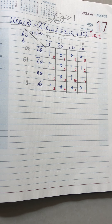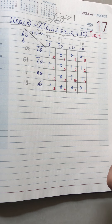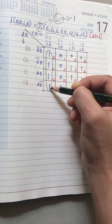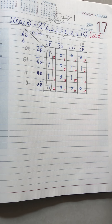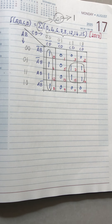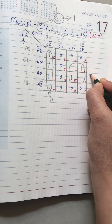Next is grouping. For grouping, first check for octal — octal means 8 terms — but here we don't have any octal group. Next is quad — quad means 4 terms. Here you have a first quad of four 1s and one more quad here. Next check for pairs — no pairs here. So we have two groups: this is g1 and this is g2.